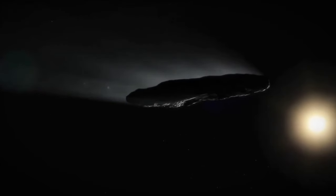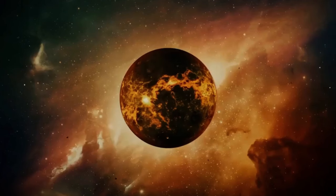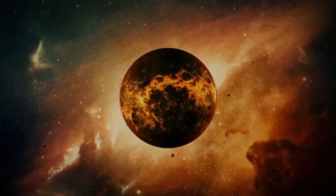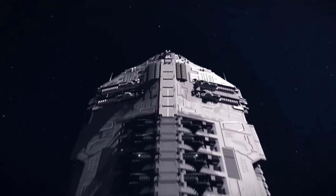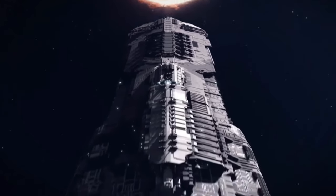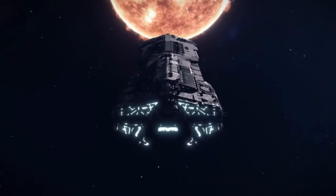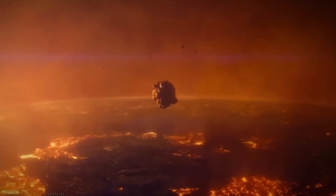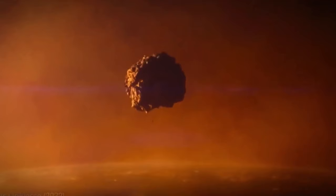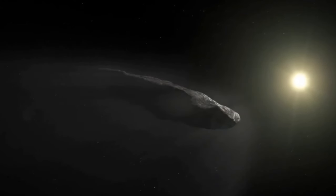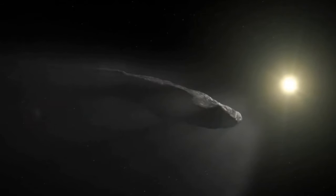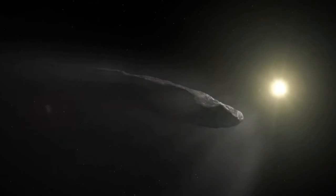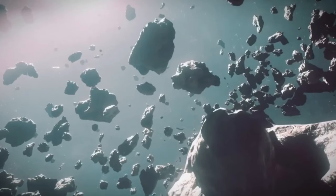Designated 1I/2017 U1 Oumuamua, it entered the spotlight on October 19, 2017, thanks to the University of Hawaii's Pan-STARRS-1 telescope. Initially tagged as a comet, subsequent observations after its slingshot maneuver past the Sun on September 9, 2017, at an astounding velocity of 196,000 miles per hour, revealed no telltale signs of cometary activity. Re-evaluation led to a temporary reclassification as an asteroid.